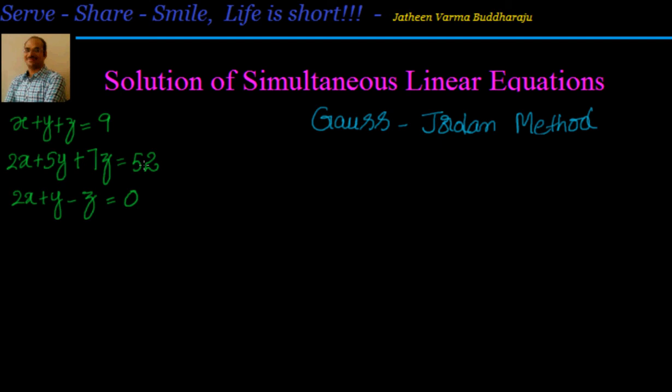Hello friends, welcome back. In this session we will look at how to solve simultaneous linear equations using the Gauss-Jordan method. We have three equations: x plus y plus z equal to 9, 2x plus 5y plus 7z equal to 52, and 2x plus y minus z equal to 0.